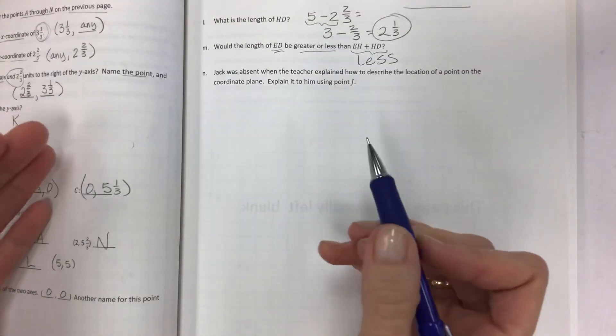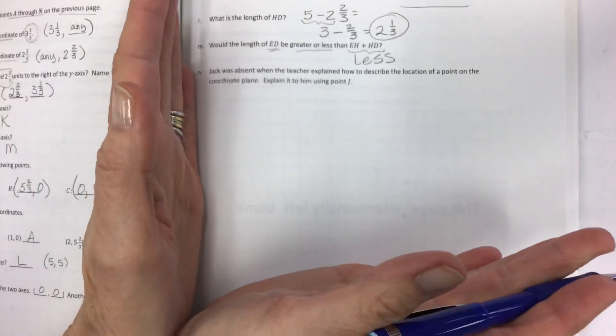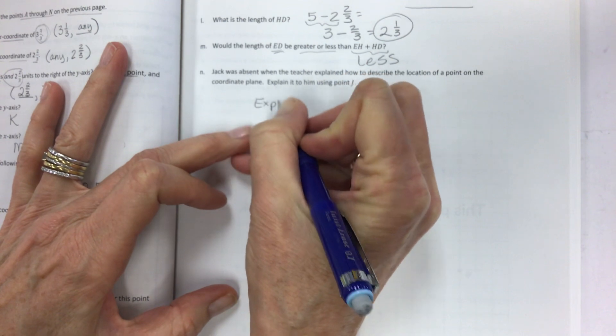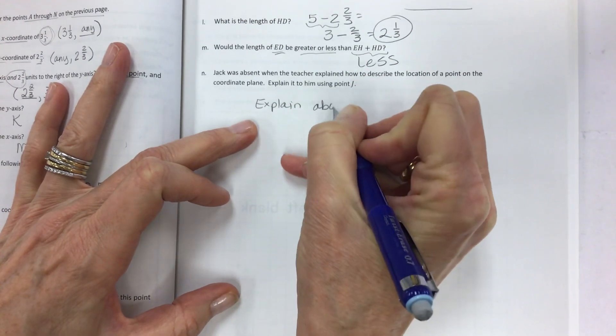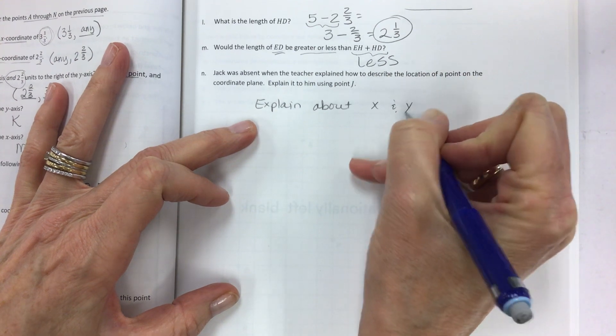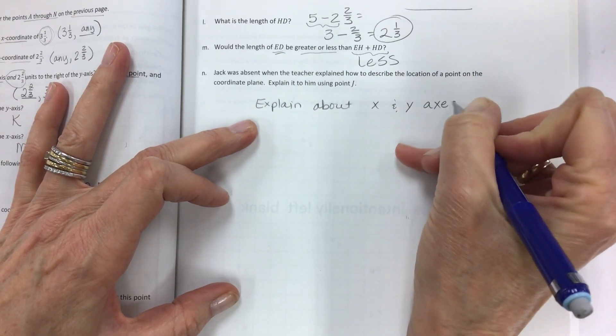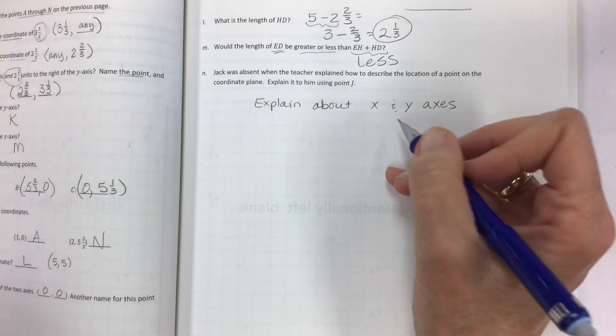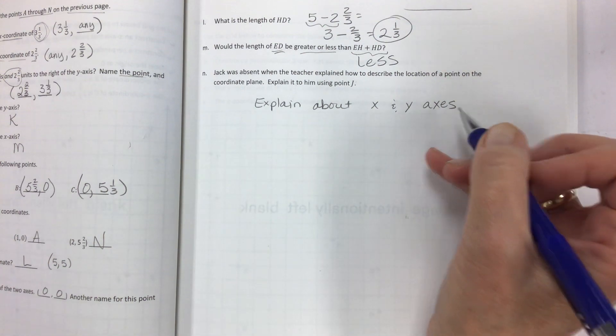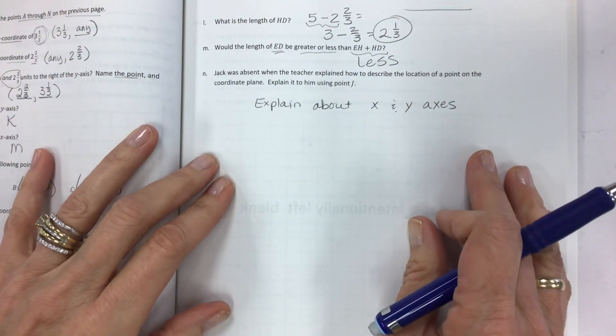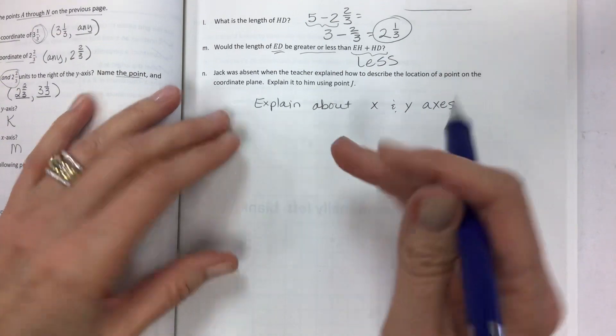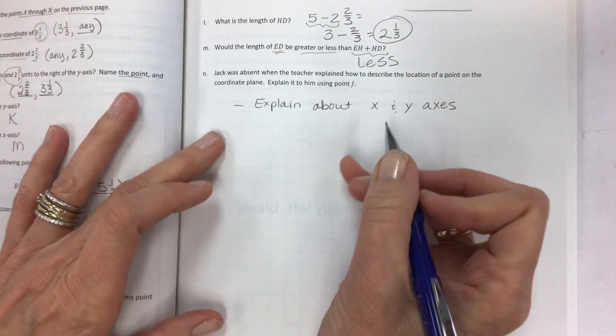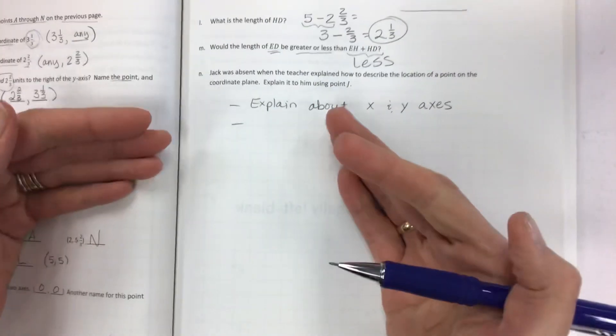So first thing, you need to understand what the axes are. So explain about the x and y axes. A-x-e-s. You can, it's A-x-i-s for the singular or e-s for the plural. Your explanations may be very different. So really just kind of check the overall points. Explain to Tim using point J. So we've got the x-axis and the y-axis. You have to count. This is basically, it's a number line.